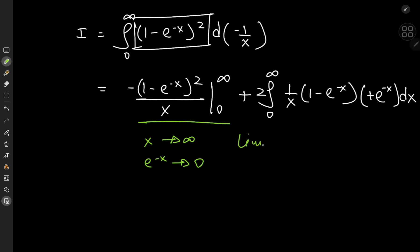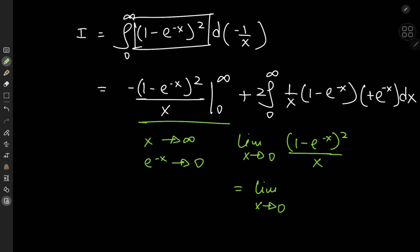But what about the limit as x approaches 0 of (1 minus e to the negative x squared) divided by x? As x approaches 0, e to the negative x squared approaches 1, so that's a 0 over 0 form, which means we should use L'Hôpital's rule and differentiate the numerator and denominator. So we have the limit as x approaches 0 of (1 minus e to the negative x) times 2 times e to the negative x, divided by 1.